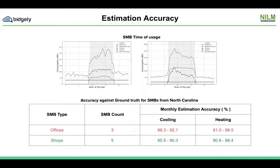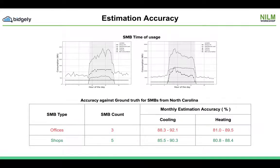On the estimation side, here you can see the time-of-usage variation of always-on operational load, cooling, and heating consumption estimated in an unsupervised way. The table below shows the performance against ground truth from 8 SMBs from North Carolina, US. We are about 90% accurate in AC estimates and 85% accurate in heating estimates on average.